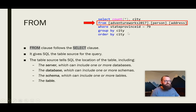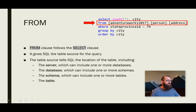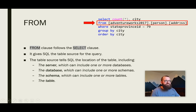The FROM clause is basically always going to follow the SELECT clause. In general, when you're running a query to return elements from a SELECT clause, the FROM clause appears immediately after it. It gives SQL the table source or table reference for the elements in the select list. In this particular example, we have FROM AdventureWorks2017.person.address — this whole portion of code that follows the FROM keyword is your table source.